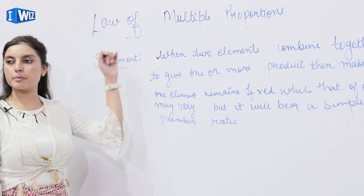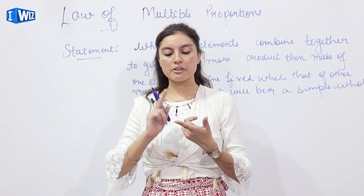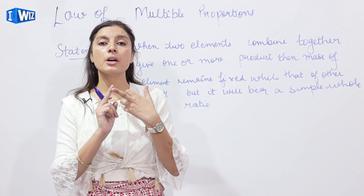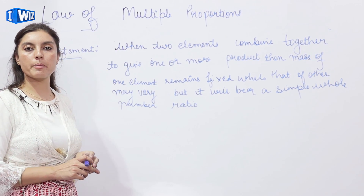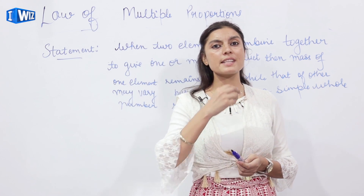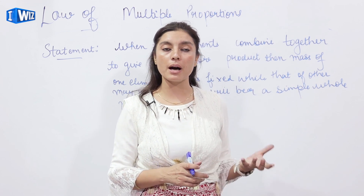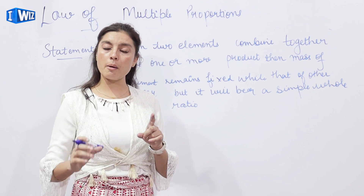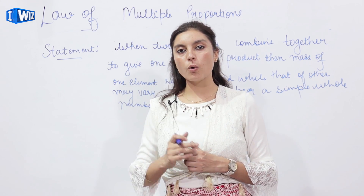Now we study the third law: the Law of Multiple Proportions. We have already studied the Law of Conservation of Mass and Energy, and the Law of Constant Proportions. The Law of Multiple Proportions states that when two elements combine together to form compound C, the mass of one element remains fixed while the mass of the other may vary — but if it varies, it will bear a simple whole number ratio.